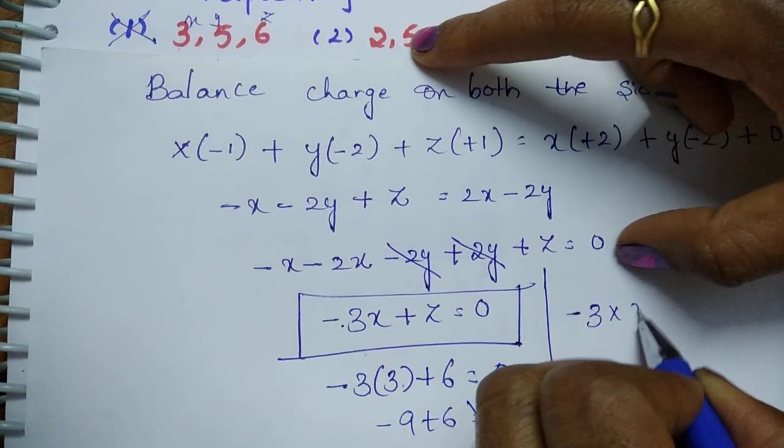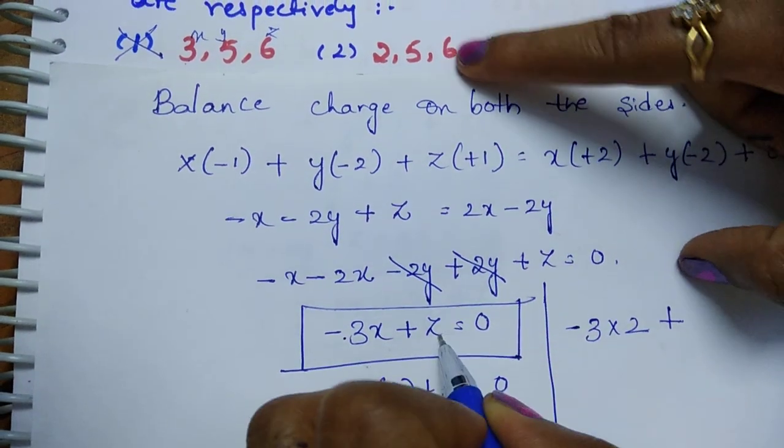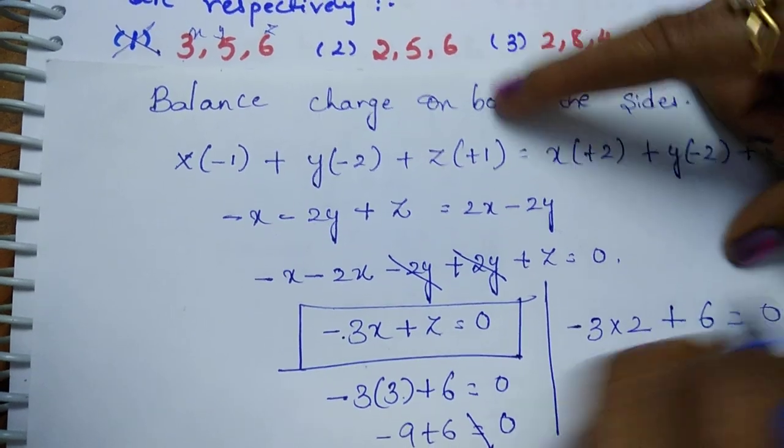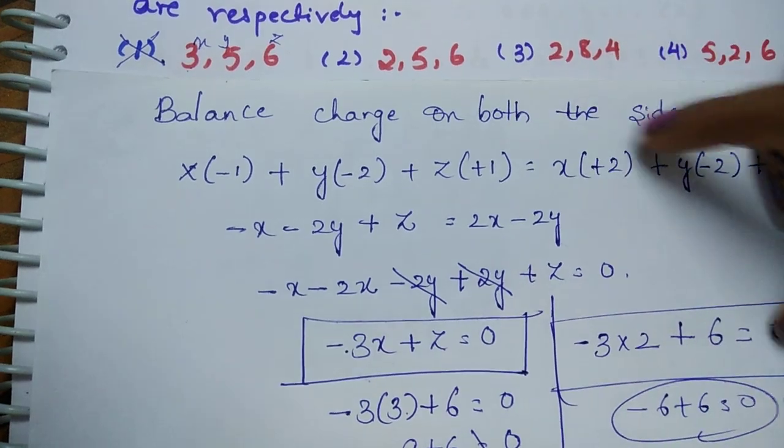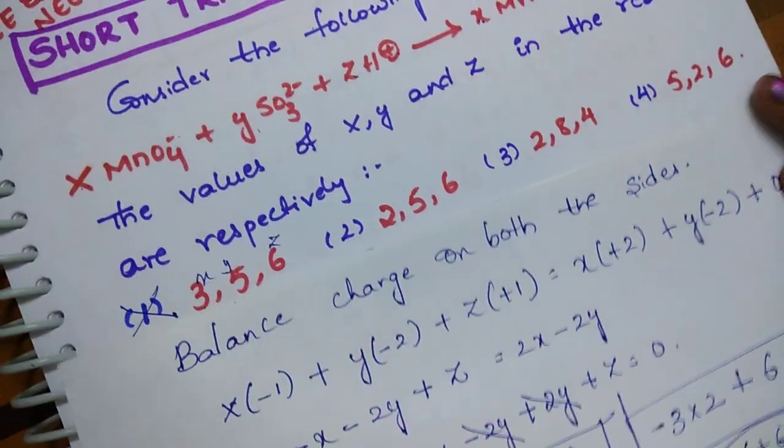Minus 3 into 2 plus z value is 6, is equal to 0? Yes, right. Minus 6 plus 6 is equal to 0. That's it.